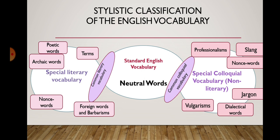You can see here the three large circles: neutral words, special literary vocabulary, and special colloquial vocabulary. The aspect of the neutral layer is its universal character — it is unrestricted in its use and can be employed in all styles of language and in all spheres of human activity, making it the most stable of all. The literary layer consists of words accepted as legitimate members of the English vocabulary with no local or dialectal character. The colloquial layer is not infrequently limited to a definite language community or confined to a special locality.